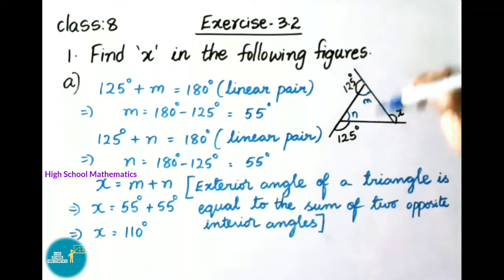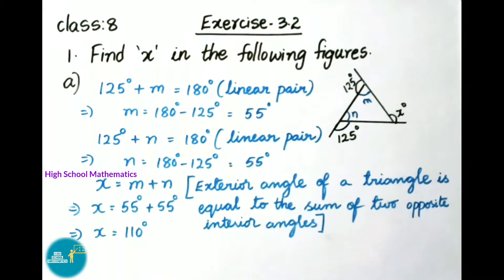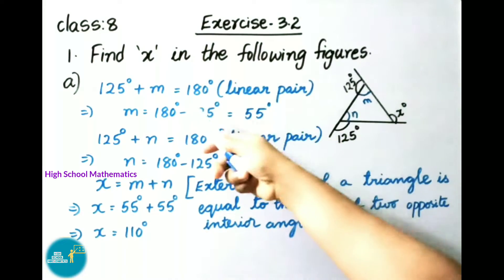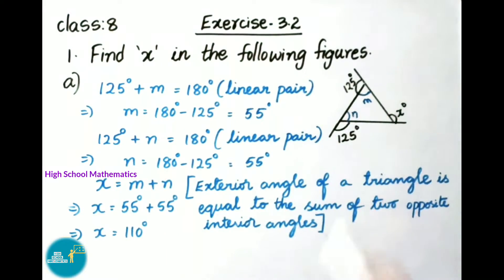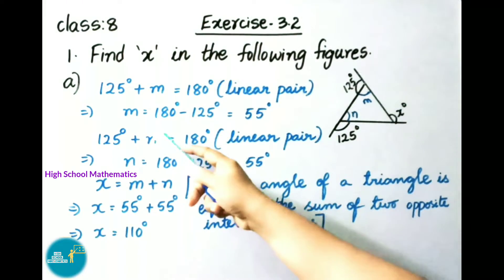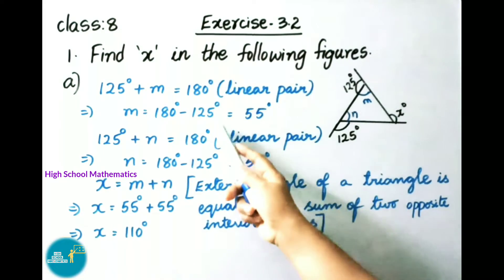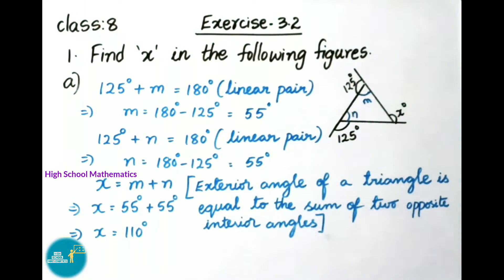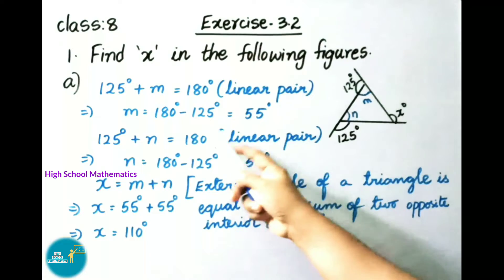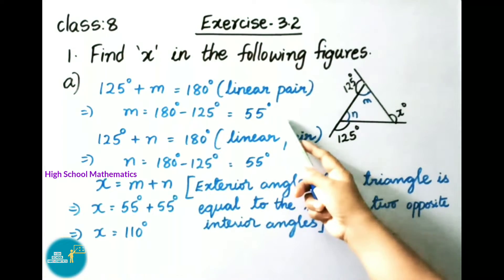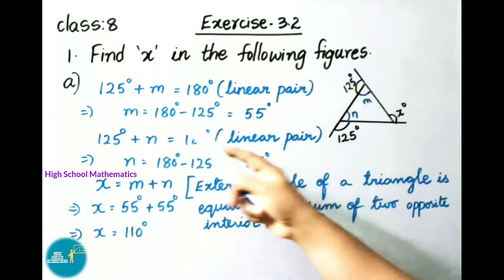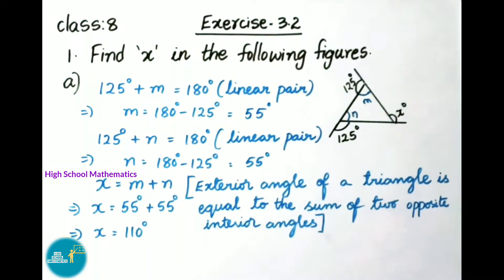125 degrees plus M forms a linear pair. We know a linear pair equals 180 degrees. So 125 plus M equals 180 degrees. Now finding M: M equals 180 minus 125, that is 55 degrees.